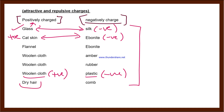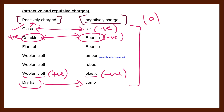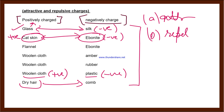This can appear in MCQs, fill-in-the-blanks, or true/false questions. For example: 'If you rub dry hair with a comb, the comb acquires negative charge — True or False?' That can be asked. Similarly: 'When cat skin is rubbed with an ebonite rod, then...' — option A could be attractive, option B could be repulsive. Such MCQ options (a, b, c) can be asked.